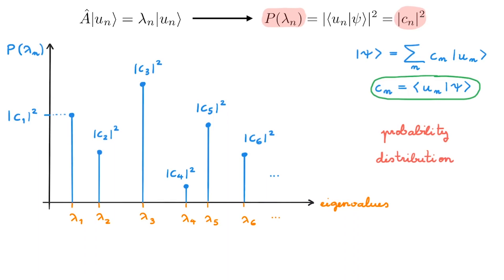The higher the lines, the more likely we will measure that particular eigenvalue. What does postulate 4 teach us about measurements? It tells us precisely what the heights of these lines are — the precise probability distribution of the different outcomes. This means that if we have a large number n of exact copies of the system, the fraction of times that we will get any given outcome approaches this distribution as n goes to infinity. But for any individual measurement, we cannot know beforehand what the outcome will be.